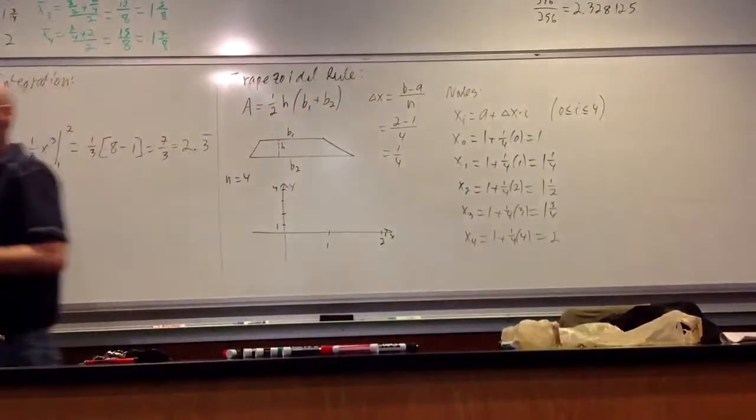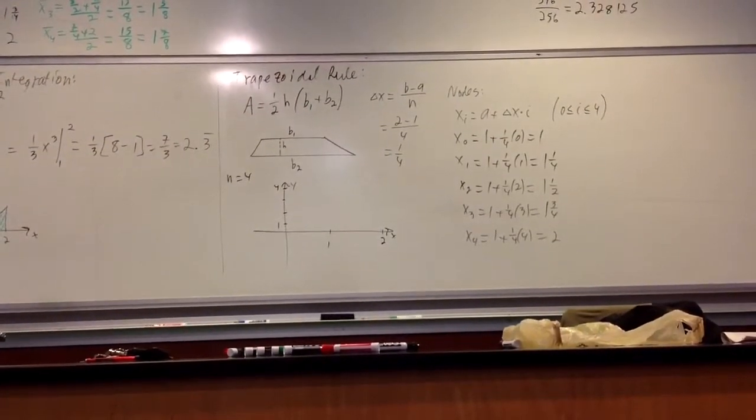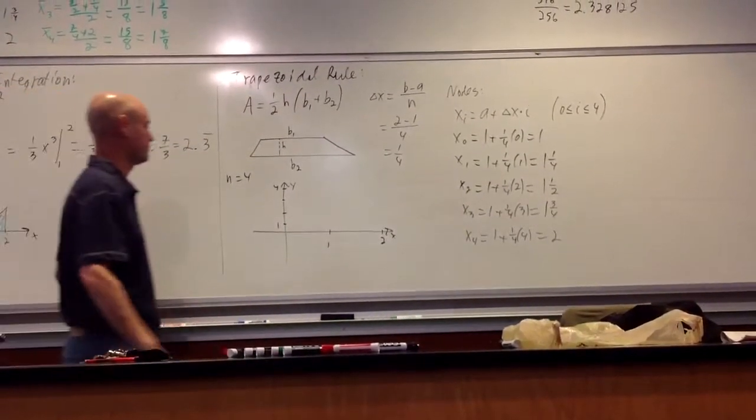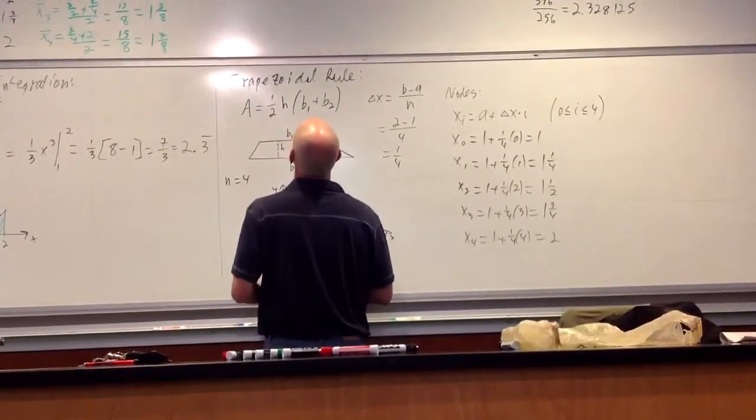Once again, please note, x not is a, x of n, in this case x of four, is b. So I'm going to break this up.